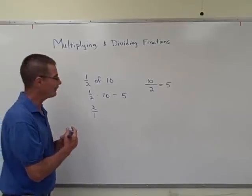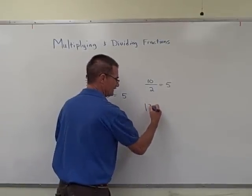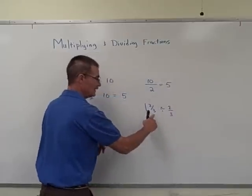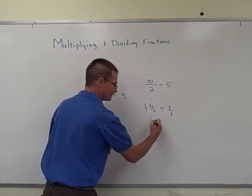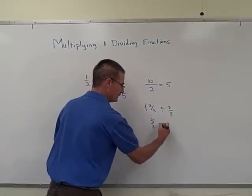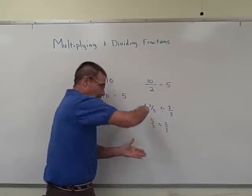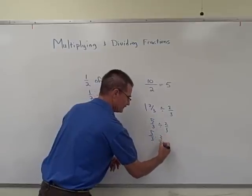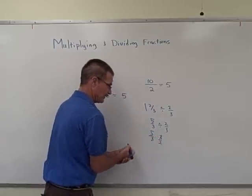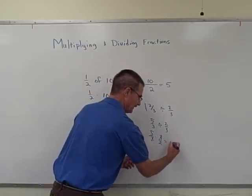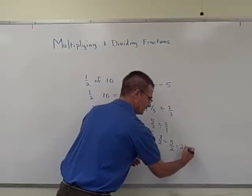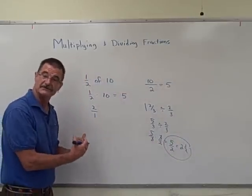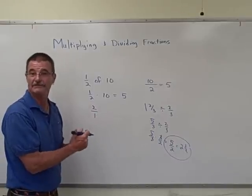So let's do one more quick example. And let's say that we had 1 and 2 thirds divided by 2 thirds. So we'll immediately change this to the improper fraction, which is 5 over 3 divided by 2 over 3. We'll invert and multiply so that we now have 5 thirds times 3 over 2. The 3's will cancel out for us. They go into each other one time. And we get 5 halves, which you probably all know is also 2 and a half. So there's our final answer. And that's really how simple division by fractions is. You're really going to change it to multiplication.